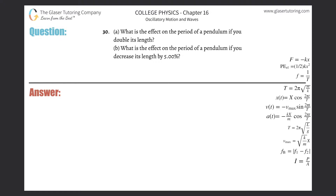Number 30, letter A. What is the effect on the period of a pendulum if you double its length? So for letter A, we want to look at the formula for the pendulum. It says that the period of a pendulum's oscillation — the time it takes for one swing — will equal 2 pi multiplied by the square root of the length of the pendulum's arm divided by g.